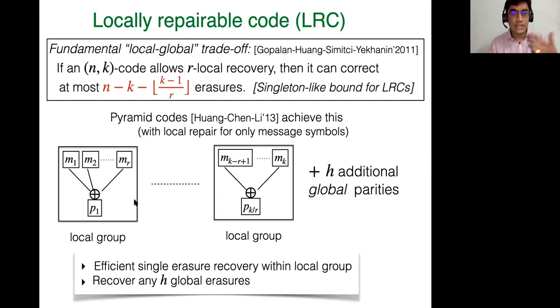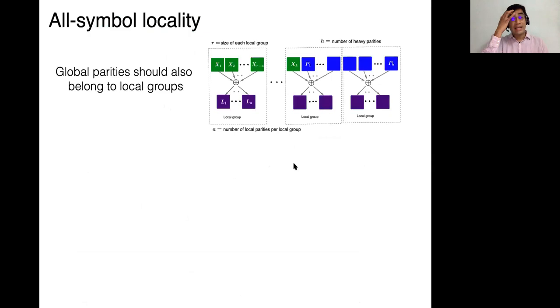And these codes have this nice property that you can always correct a single message symbol going missing very quickly, just inside a local group. For example, if you lose M2, you simply take M1 through MR or the other MIs and then P1 and XOR them and you will recover M2. And that's great. So that's very efficient. On the other hand, the extra parities also allow you to recover any h global erasures, which gives you global fault tolerance for more failures. And these are pyramid codes and it's not hard to see that they exactly achieved this kind of trade-off. But one point here is that they allow locality only for the message symbols. So if one of the parity nodes goes missing, which is also important because the parity nodes is what gives you fault tolerance, then it doesn't quite give you a way to do a local recovery.